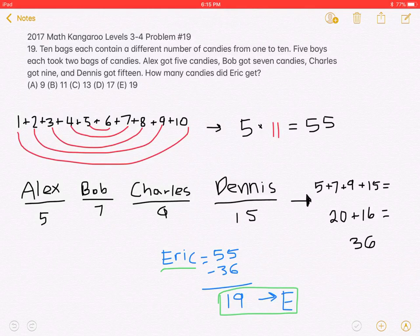Eric has 55, which is the total number of candies, minus the number of candies the other four boys have, which is 36. 55 minus 36 equals 19, which is answer choice E.